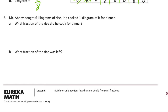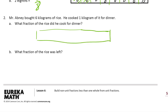Mr. Avney bought six kilograms of rice. He cooked one kilogram of it for dinner. I hope he's not eating it all by himself because that is a lot of rice. What fraction of the rice did he cook for dinner? When he cooked one kilogram, he bought six kilograms. So I'm going to draw a piece of tape here. Since there's six kilograms, we're going to have six single kilograms for all of his rice — so this whole thing is going to be six KG.